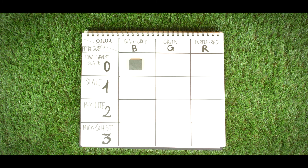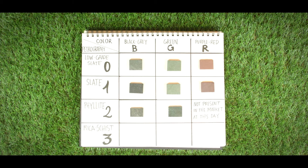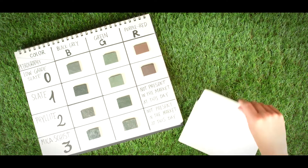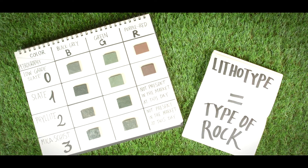By the way, lithotype means type of rock. There are some special types of slates, like variegated or slates with mixed colors. For more information, please visit our website.